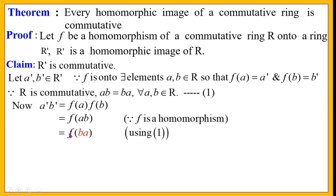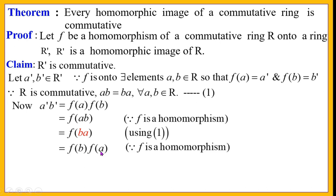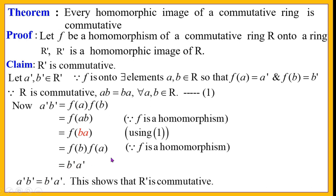Since f is a homomorphism, f(b) · f(a) = b' · a'. Thus we have shown that a'b' = b'a'. This shows that R' is commutative. Therefore, every homomorphic image of a commutative ring is commutative.